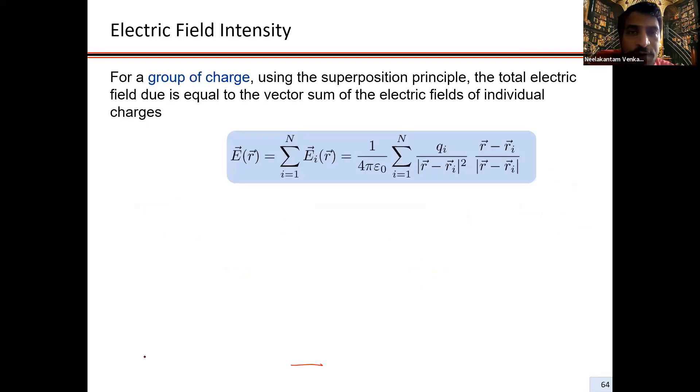If you have a group of charges, it's straightforward. Like what we saw for the force, it's going to be a summation. If I have n charges, then it's i equals one to n - the electric field due to individual charges. That means E1 plus E2 plus E3 and so on at a certain location.